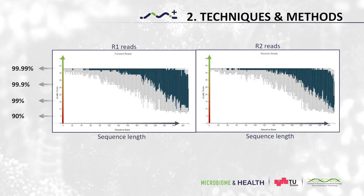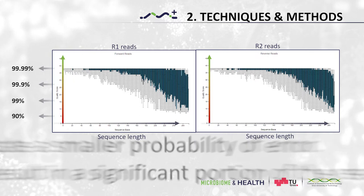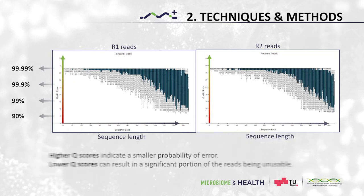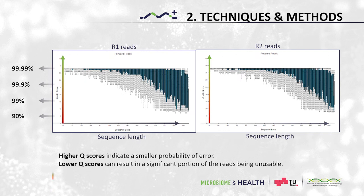We use this information to decide where to truncate or cut the sequences to remove bases or parts of the sequences with low quality. This is important so we can have confidence in the downstream analysis.